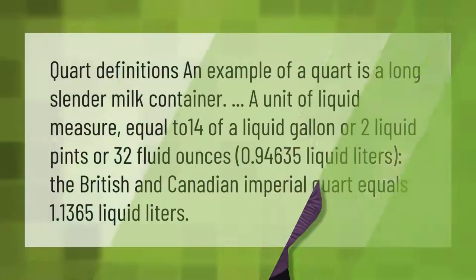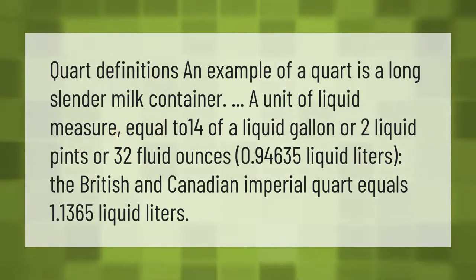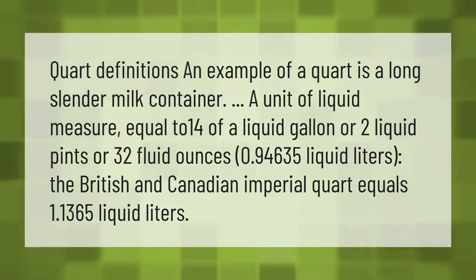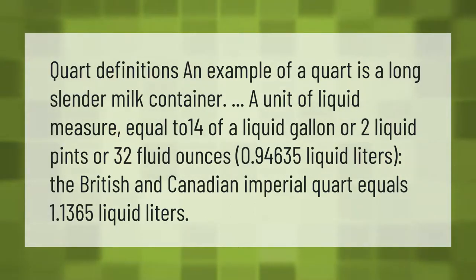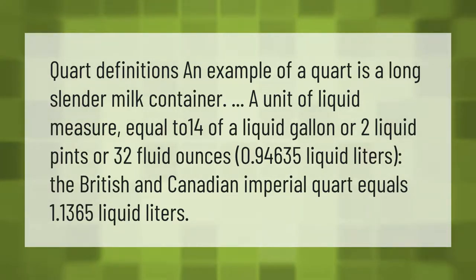Quart definitions: An example of a quart is a long slender milk container. A unit of liquid measure equal to one quarter of a liquid gallon, or two liquid pints, or 32 fluid ounces — 0.94635 liquid liters. The British and Canadian imperial quart equals 1.1365 liquid liters.